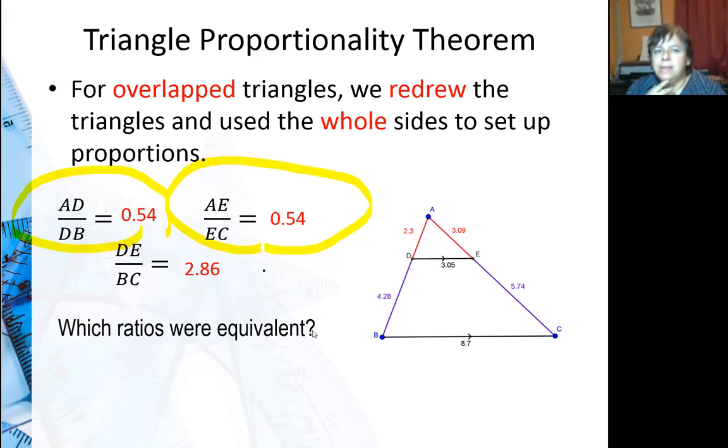So why is it, remember before we used wholes but I didn't use wholes this time. DB is not part of a whole triangle. Remember we would redraw ADE and ABC, which by the way I strongly recommend for most of your problems. Why was I able to get equivalent ratios with parts of a triangle when we had trouble with that before?